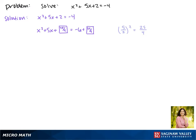On the left this factors as x plus 5 halves squared, and on the right this is negative 24 over 4 plus 25 over 4, which gives us 1 fourth.